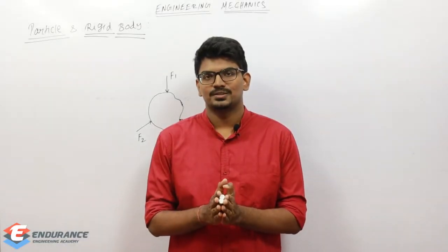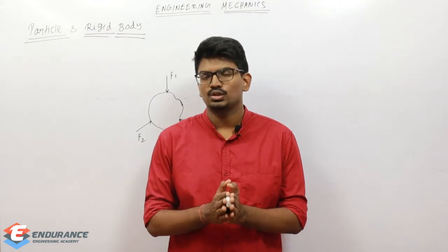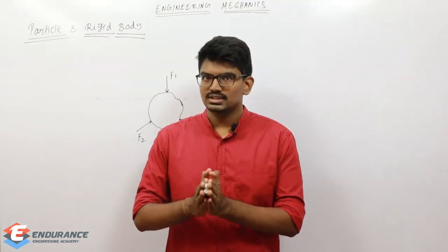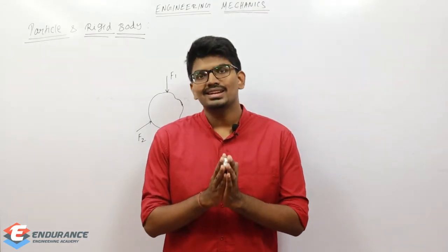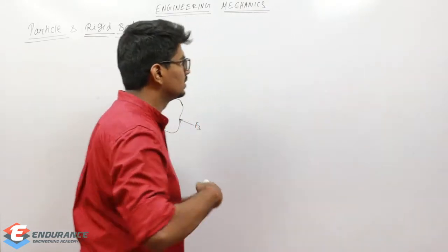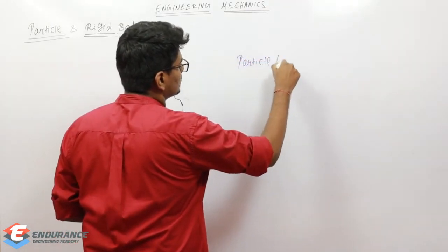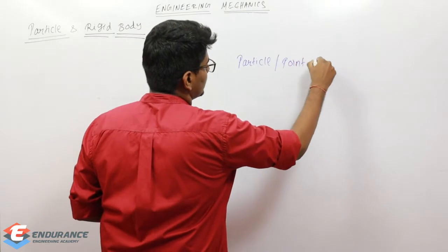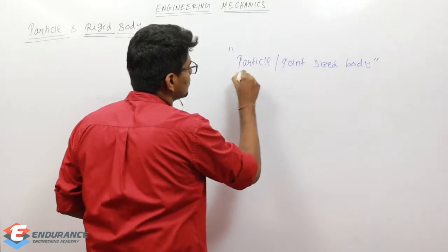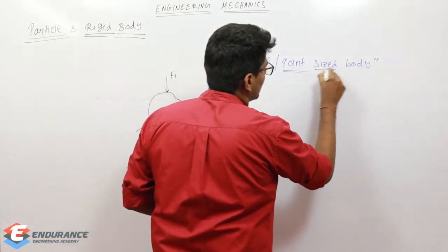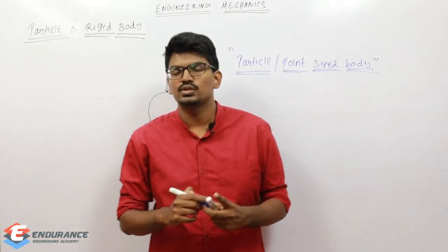Let us start with our first idealization or first assumption, which is particle. After discussing particle, we will jump into rigid bodies. When can I call any body to be a particle, or in other words, a point-sized body? When can I treat any body to be a particle or point-sized body? That is the thing which we are going to identify now.